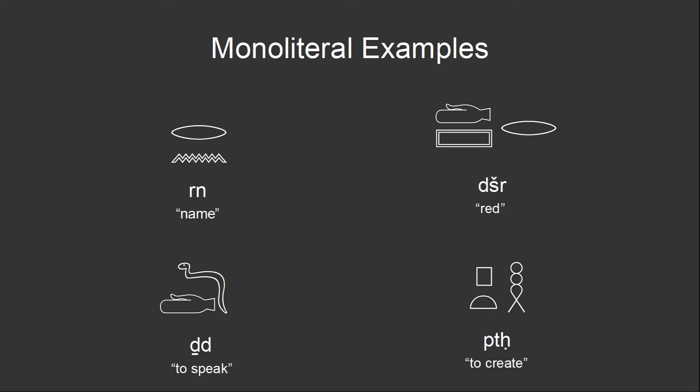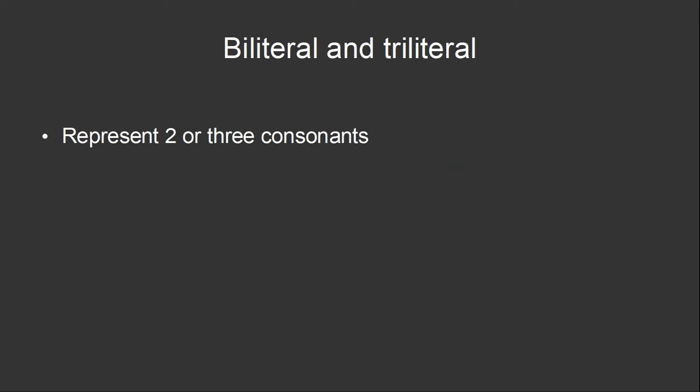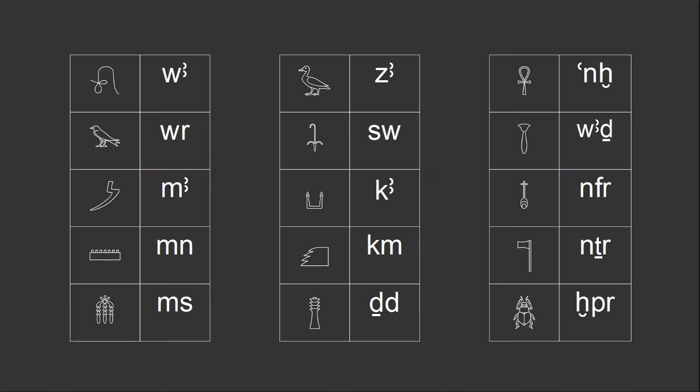only a relatively small proportion of words were ever written with just monoliterals, and these were combined with other phonetic symbols, as well as semantic symbols. The other phonetic symbols are biliteral and triliteral symbols. There are over 100 biliterals, and about 40 triliterals. On screen now are some examples of some of the more commonly used ones.